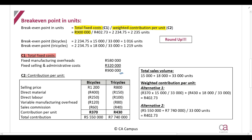Now we need to calculate the weighted contribution per unit. We start by calculating the contribution per unit. Remember, the contribution per unit is just the selling price per unit minus the variable costs. This is a simple calculation because all the information was provided for both products — for each product, just take the selling price per unit, deduct all variable costs, and that gives you the contribution per unit.